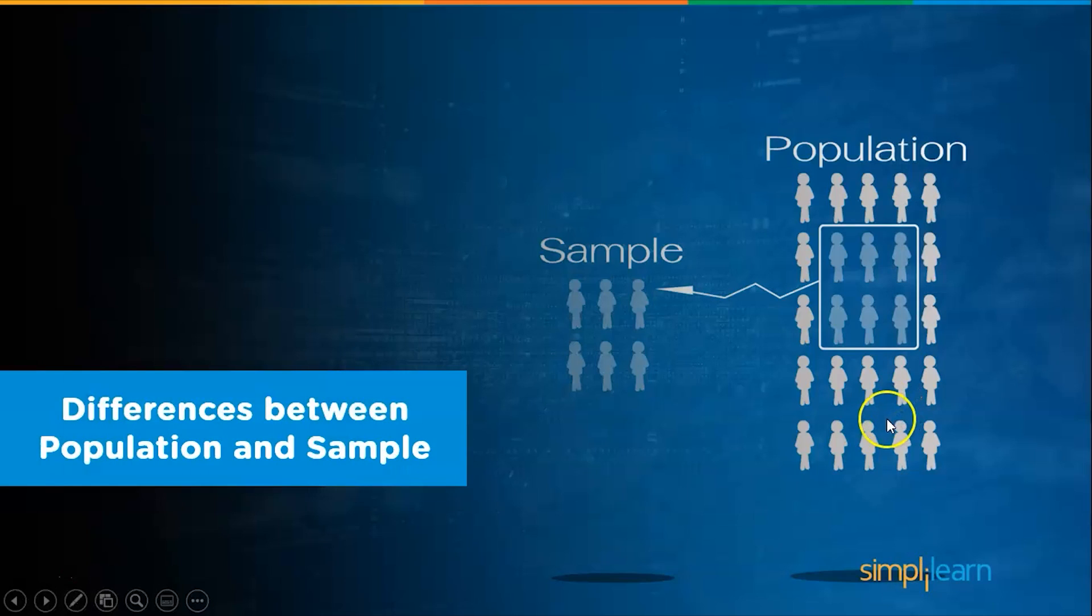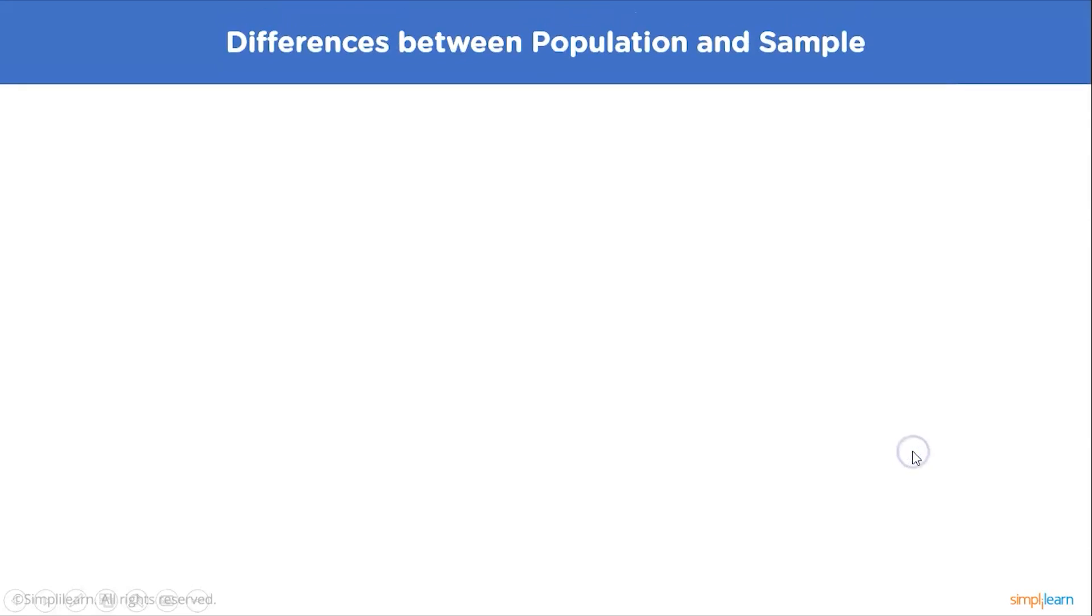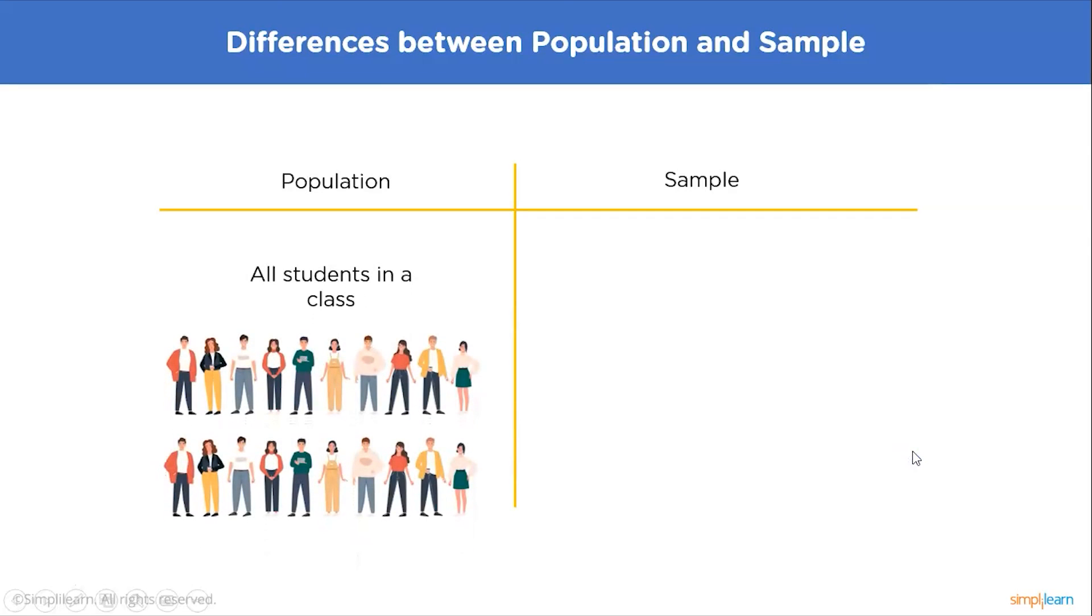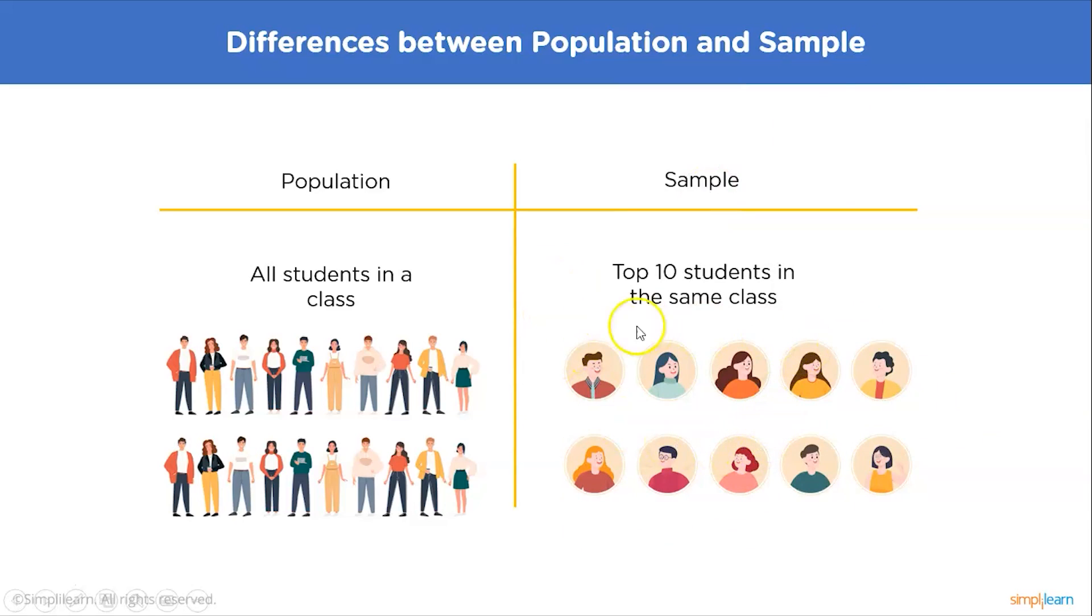Now let's look at the differences between population and samples with the help of some examples. The first example would be that all students in a class would constitute the population of that class. A sample would be only the top 10 students within the same class. The sample is a small subset of the population in this case.